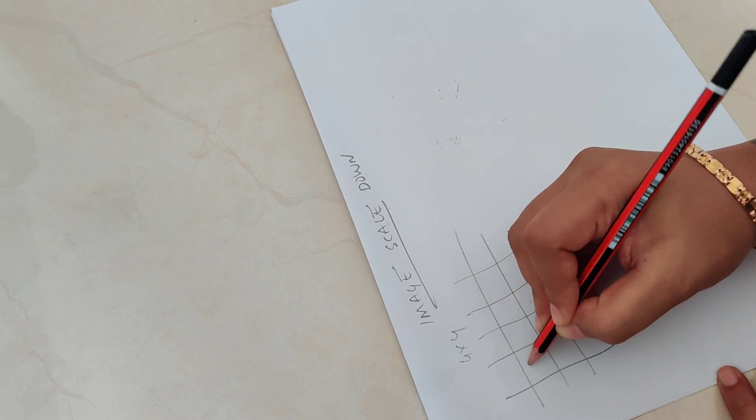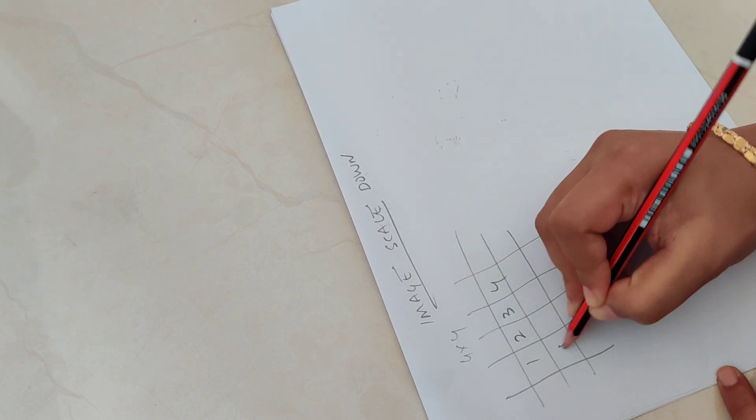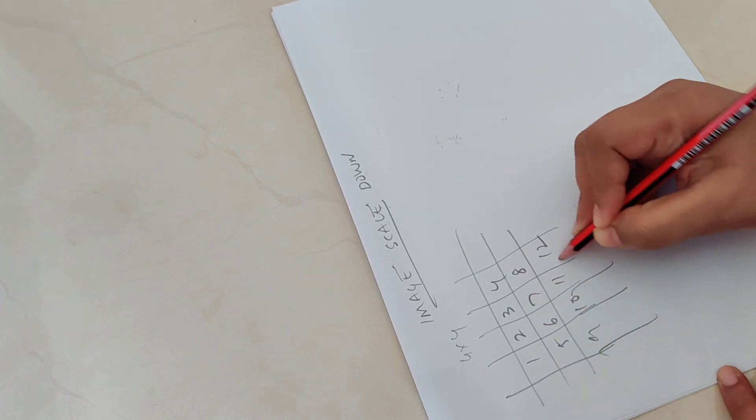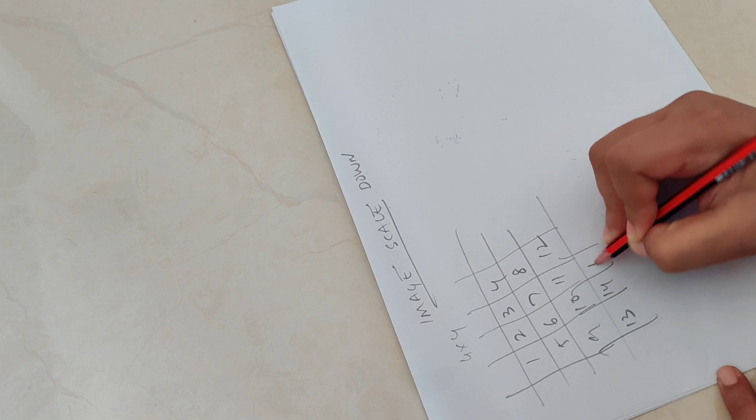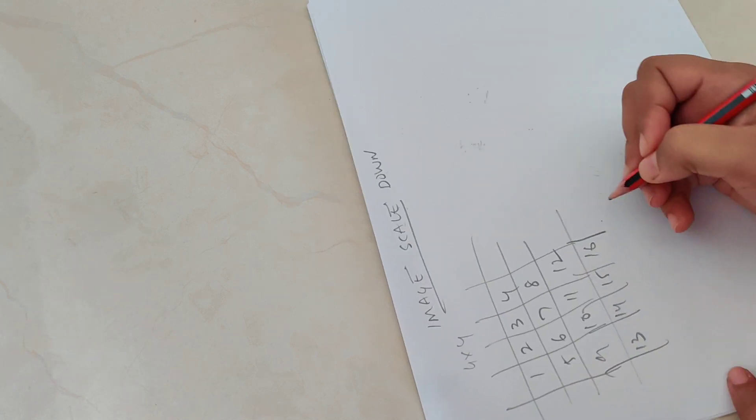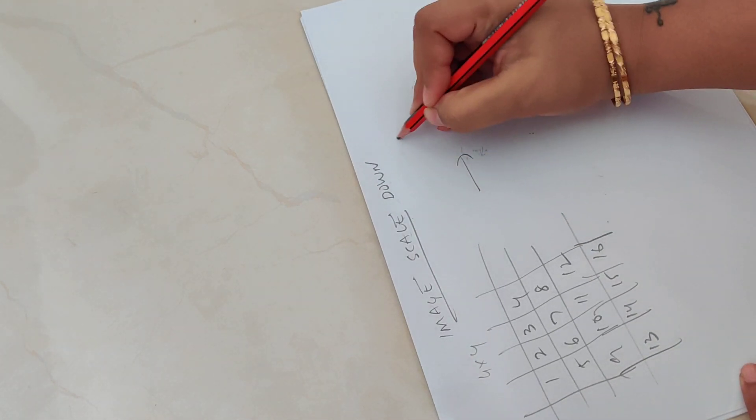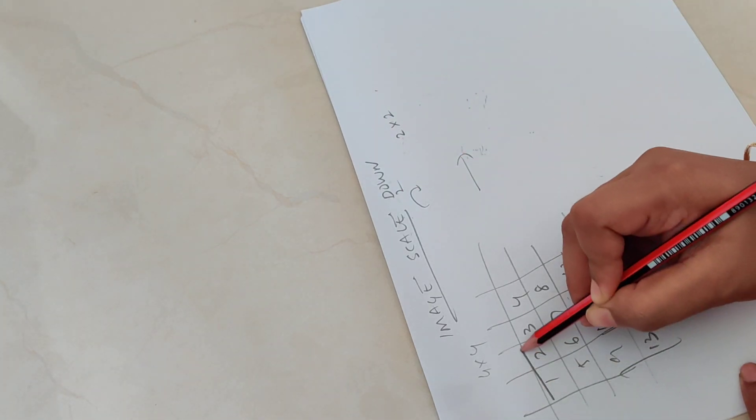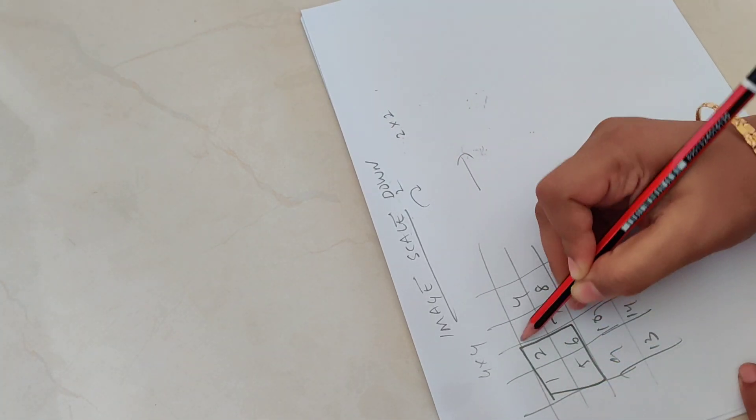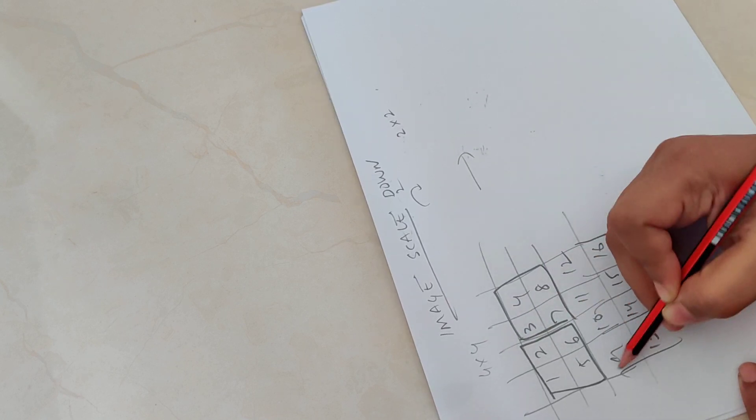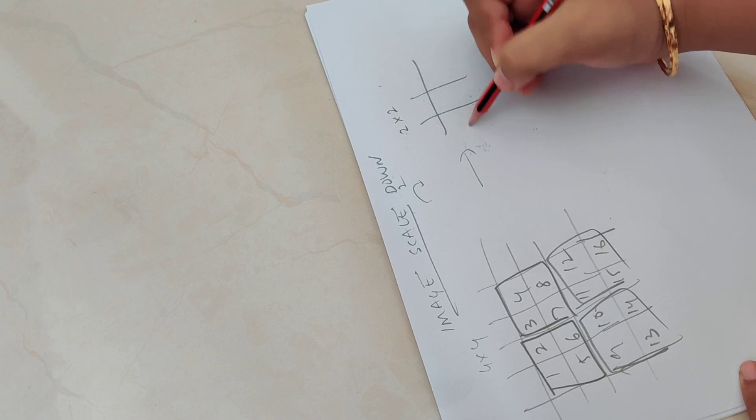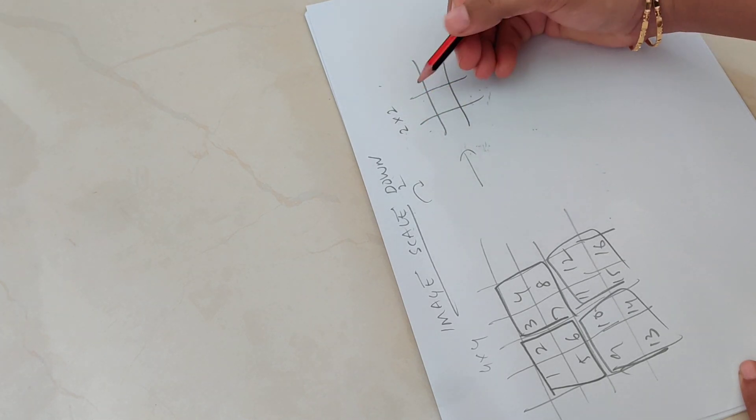So you have 1, 2, 3, 4, 5, 6, 7, 8, 9, 10, 11, 12, 13, 14, 15, 16. When you want to scale down to 2 cross 2, you are scaling down by 2. So it is going to take every 2 cross 2 square and just averages it out and puts that in the new matrix.